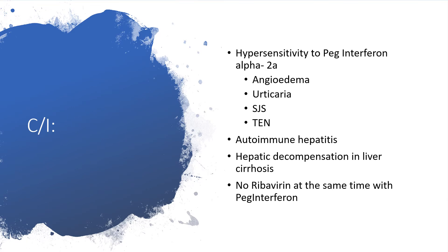Possible contraindications include hypersensitivity to PEG interferon alpha 2a — once that has occurred, no PEG interferon alpha 2a. This hypersensitivity can manifest as angioedema, urticaria, Stevens-Johnson syndrome, and toxic epidermal necrolysis. Autoimmune hepatitis is another contraindication, and of course hepatic decompensation in liver cirrhosis. Also, when ribavirin is being used, do not give PEG interferon at the same time.